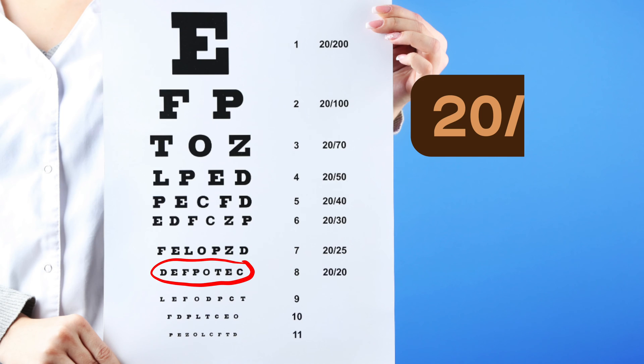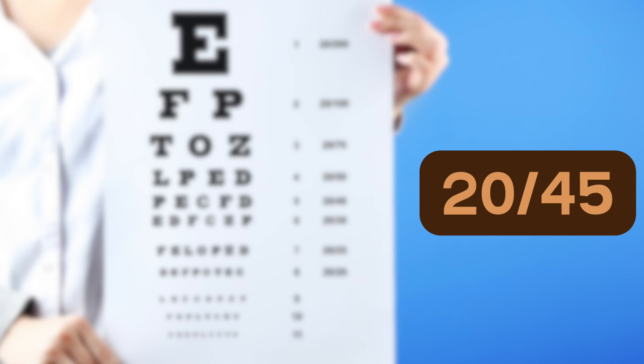So at 20 feet, if someone is able to read the letter size 20 without any mistakes, they have 20-20 vision. And if someone reads letter size 45, then they have 20-45 vision.